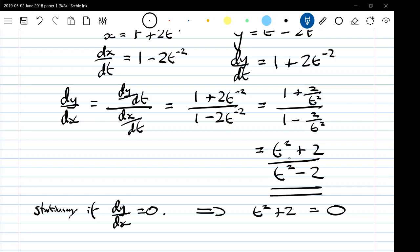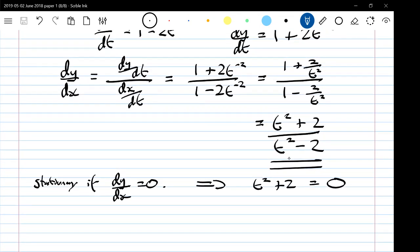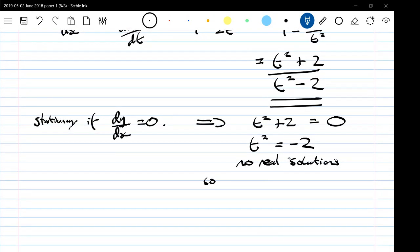T squared plus 2 being equal to 0 is clearly a problem, because if you're squaring t, then t squared would be a positive number. T squared plus 2 would have no real solutions. So that means t squared would have to be equal to minus 2, and that has no real solutions.